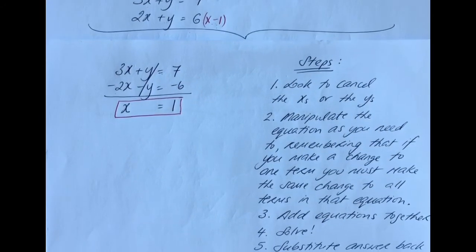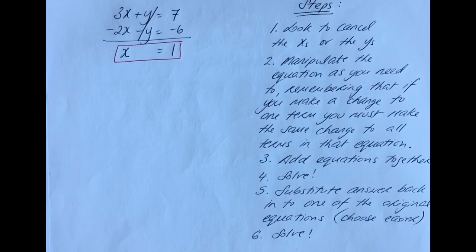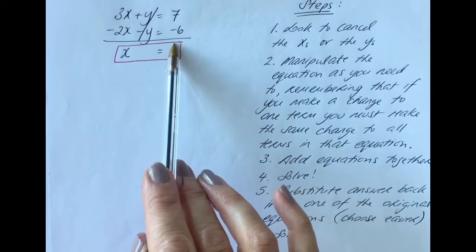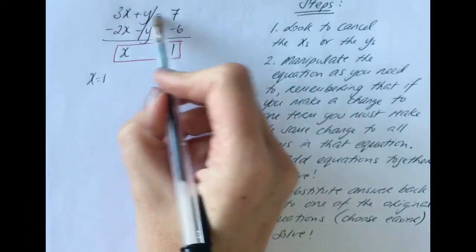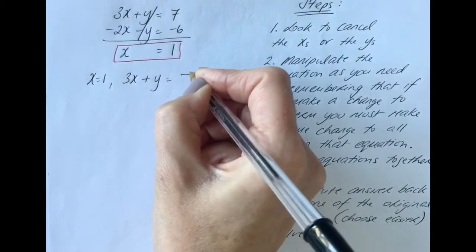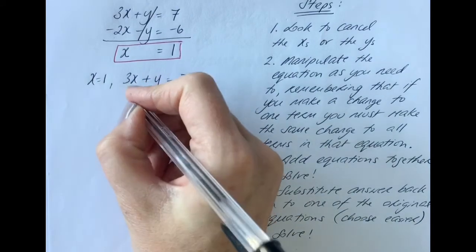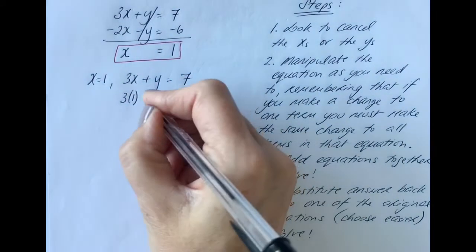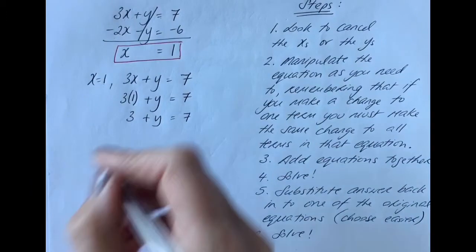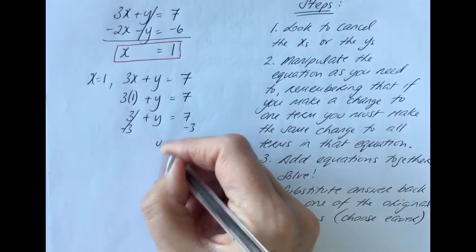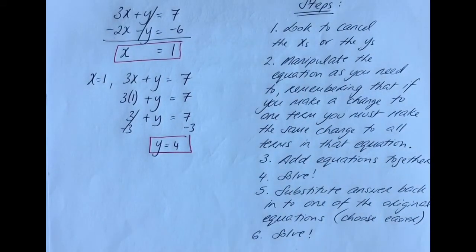Step five is to substitute the answer back into one of the original equations. x equals 1, so I'll use the original top equation: 3x + y = 7. Substituting in: 3 times 1 plus y equals 7, so 3 plus y equals 7. Taking 3 from both sides gives y equals 4. So x equals 1 and y equals 4.